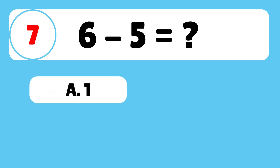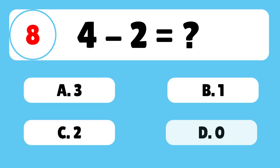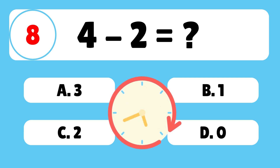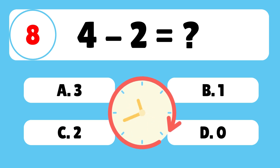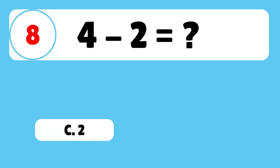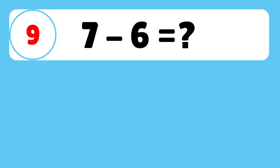Great job! Question 8: What is 4 minus 2? The answer is C. 4 minus 2 is equal to 2. Nice work!